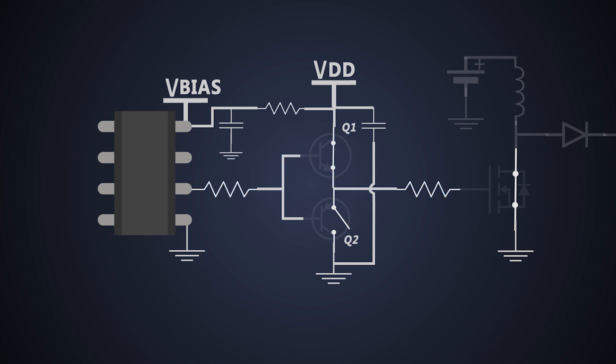When we provide a low signal to turn off the power MOSFET, this time the Q1 turns off and Q2 turns on because its base is pulled to ground. Hence the MOSFET input capacitor gets discharged through the Q2 and MOSFET turns off.